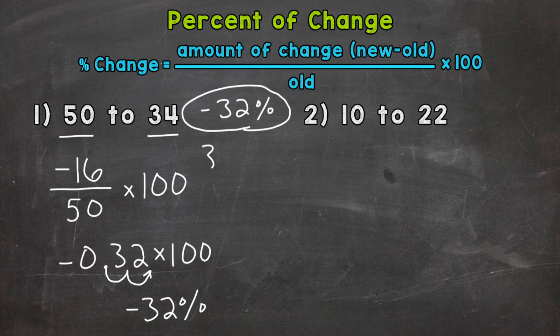Or we can write 32 percent and then the word decrease to show that we had a decrease. So 32 percent decrease or negative 32 percent. Now both of those represent that percent of change between the 50 and 34. They represent that decrease.